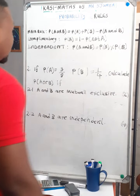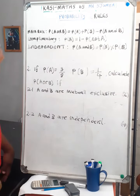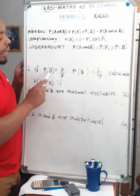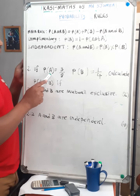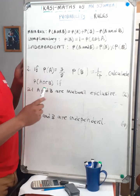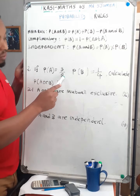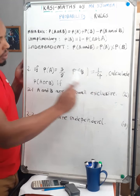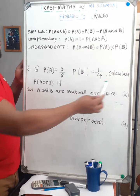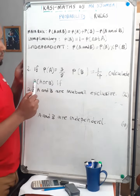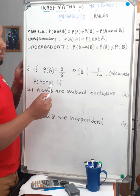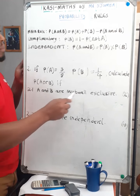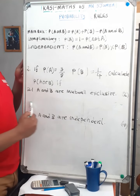This second example is as follows: the probability of A is equal to 3 over 8, probability of B is equal to 1 over 4. We should calculate the probability of A or B. For question 2.1, A and B are mutually exclusive.